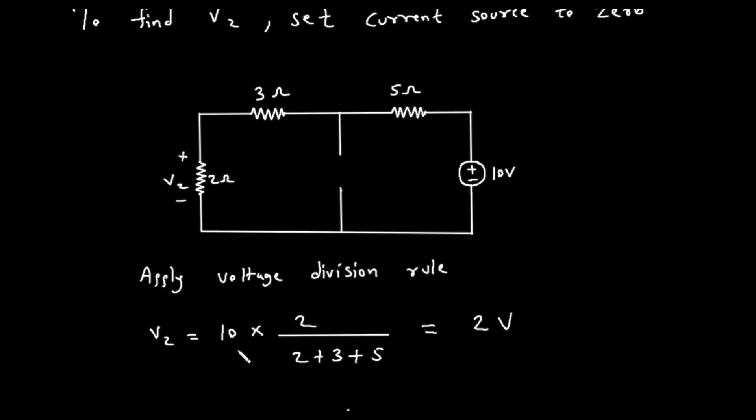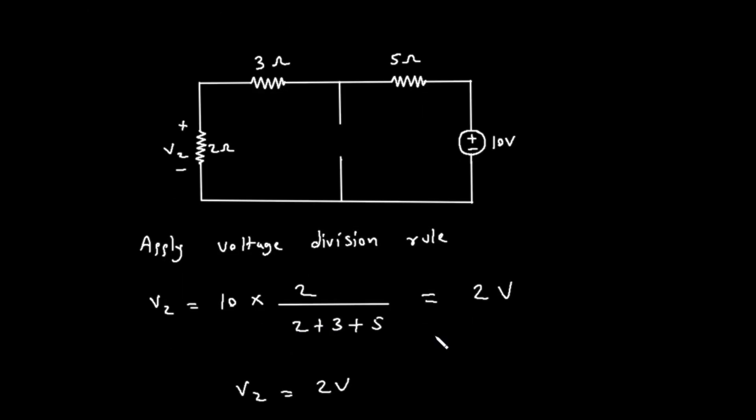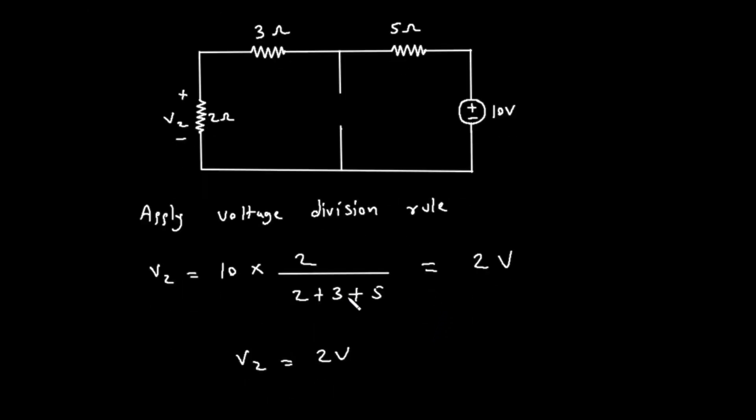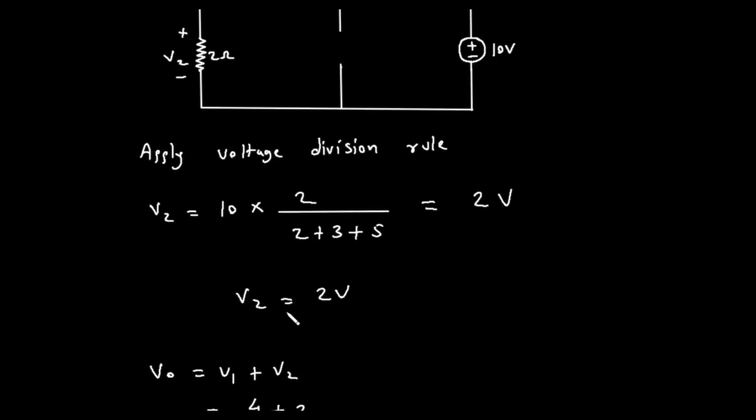The formula is V2 equals 10 times the fraction, with 2 in the numerator, and 2 plus 3 plus 5 in the denominator. Let's calculate this. The denominator is 2 plus 3 plus 5, which equals 10. So, V2 equals 10 times 2 divided by 10. The 10s cancel out, leaving us with 2 volts. So, V2 is 2 volts.